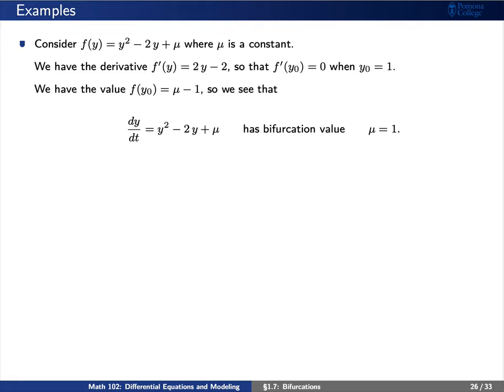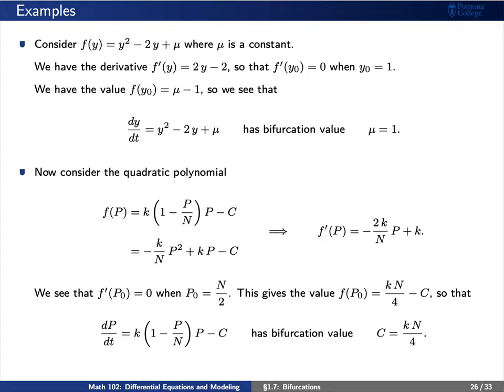Now let's consider the quadratic from the fishing problem: f(P) = K(1 − P/N)P − C. Taking the derivative gives f'(P) = −2K/N · P + K, which equals zero when P₀ = N/2. Plugging back into f gives f(P₀) = KN/4 − C, and setting this equal to zero gives the bifurcation value C = KN/4.